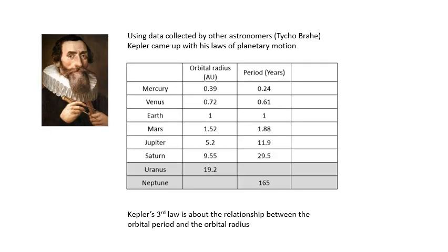Johannes Kepler is famous for his laws of planetary motion. The third law is the one you actually need to know. What he did was take lots of data from other astronomers, including a very interesting character called Tycho Brahe, who famously had a golden nose. Kepler noticed and worked out patterns in that data.